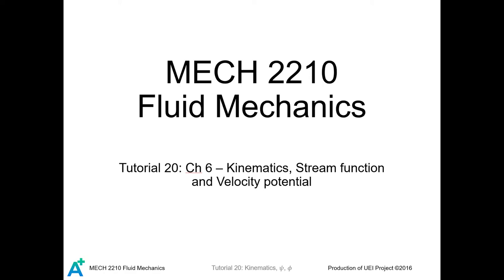In this Tutorial 20, we will start Chapter 6. We will first look at how to describe the complex motion of fluid elements, and then I will introduce one pair of functions: the stream function and a velocity potential. Then we finally discuss some of their physical significance.